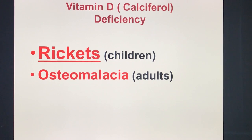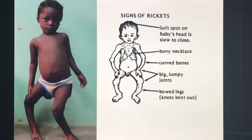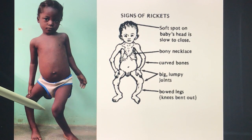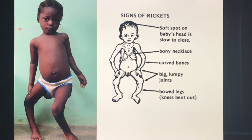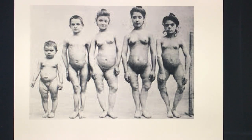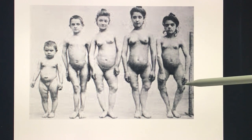Classic signs of rickets include the soft spot on the baby's head, the rachitic rosary or bony necklace, curved bones, big lumpy joints, and bowed legs. Here are pictures showing classic rickets — pay attention to the bow legs and bent joints. The most classic presentation is the bowed legs seen in the image.